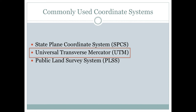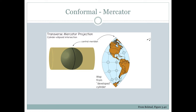Another commonly used coordinate system is the Universal Transverse Mercator, or UTM, coordinate system. Let's review what a transverse Mercator projection looks like. It's one where we're projecting onto a cylinder, and the cylinder is oriented perpendicular to the axis of the earth, so that what's touching the cylinder is one line of longitude. Along that line of longitude we would have zero distortion, and as we move away from that line of longitude we would get more and more distortion.